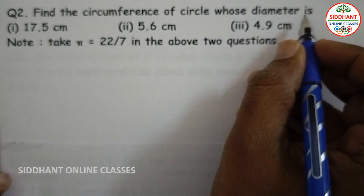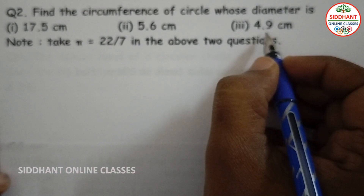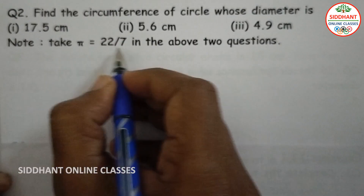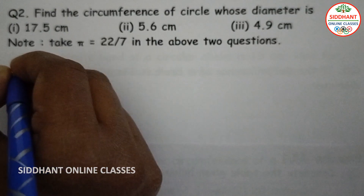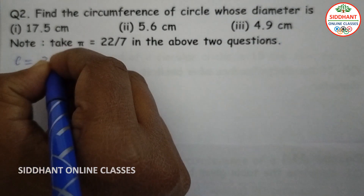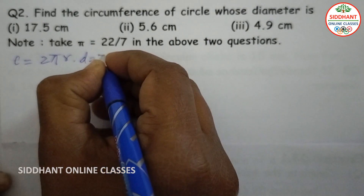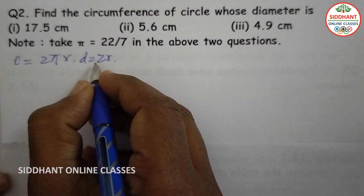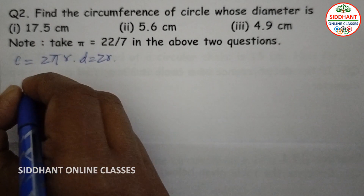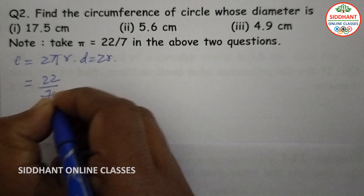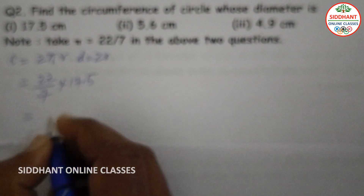Question number two: find the circumference of a circle whose diameter is 17.5 centimeter, 5.6 centimeter, and 4.9 centimeter, taking pi as 22/7. We know circumference equals 2 pi r, and since d equals 2r, circumference equals 22/7 into diameter. For diameter 17.5: 22/7 into 17.5, when you multiply we get 55 centimeters.